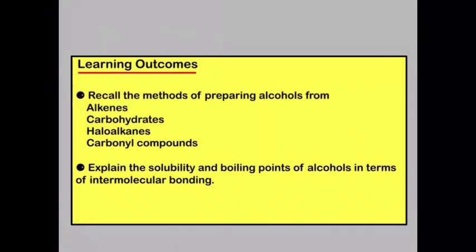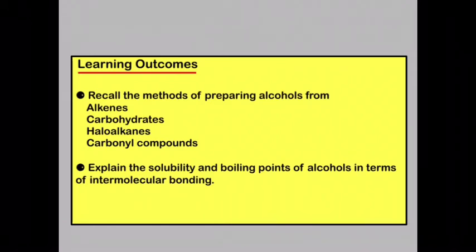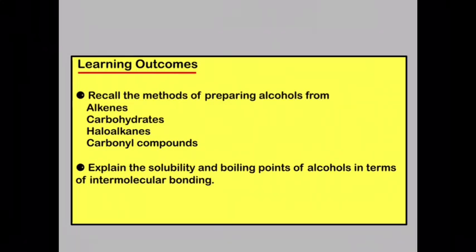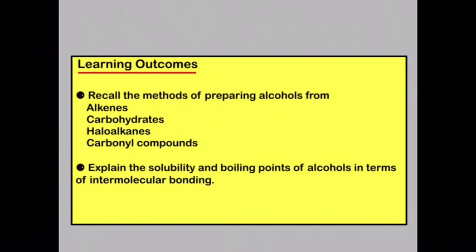So by now you should be able to recall the methods of preparing alcohols from alkenes, carbohydrates, haloalkanes and carbonyl compounds. You should also be able to explain the solubility and boiling points of alcohols in terms of intermolecular bonding.